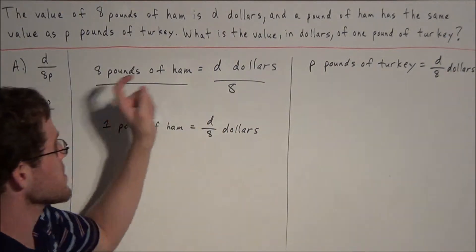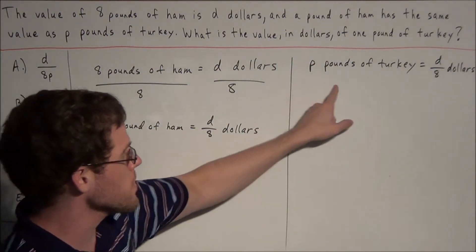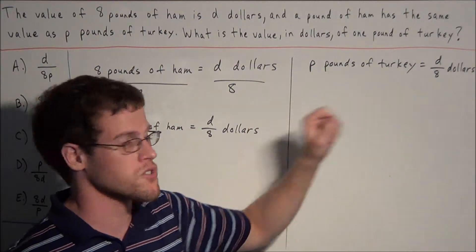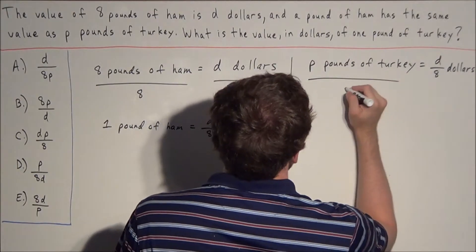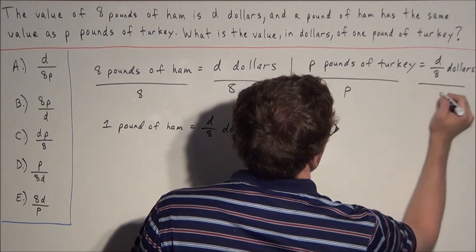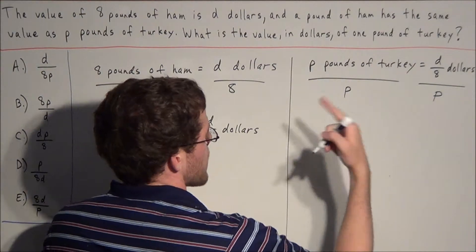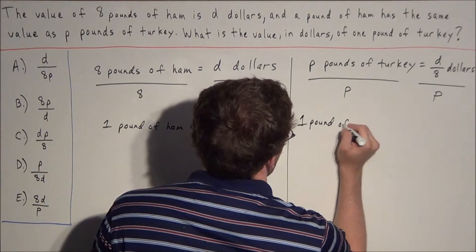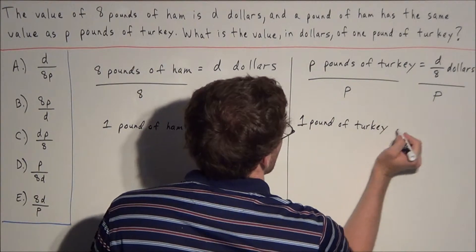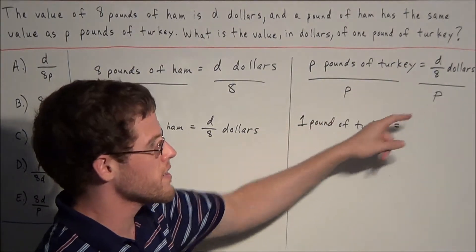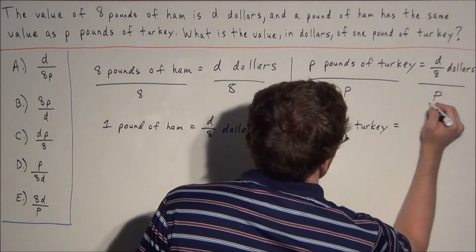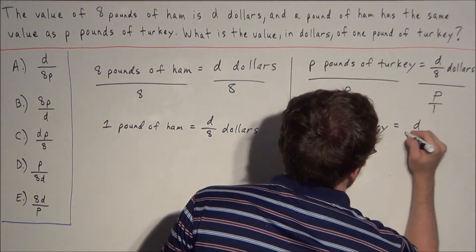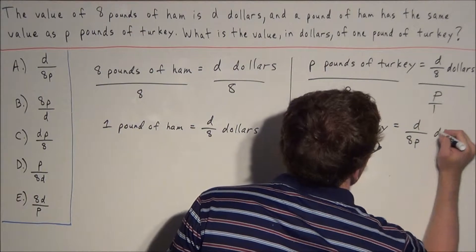To find the price in dollars of 1 pound of turkey, we know p pounds of turkey costs d over 8 dollars. So for 1 pound, we divide both sides by p. Since p divided by p equals 1, we get 1 pound of turkey equals d over 8 divided by p. Writing p as p over 1 and applying keep, change, flip, this works out to d over 8p dollars.